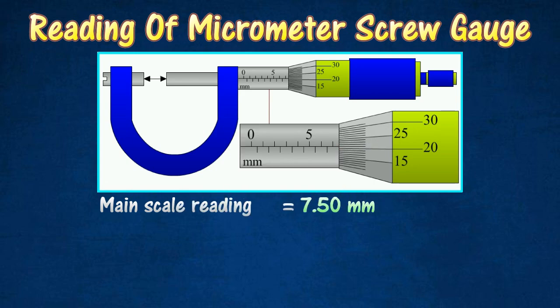Next, determine the reading on the circular scale, which is the marking on the circular scale that coincides with the horizontal line of the main scale. In this case, the reading on the circular scale is 0.21 mm.